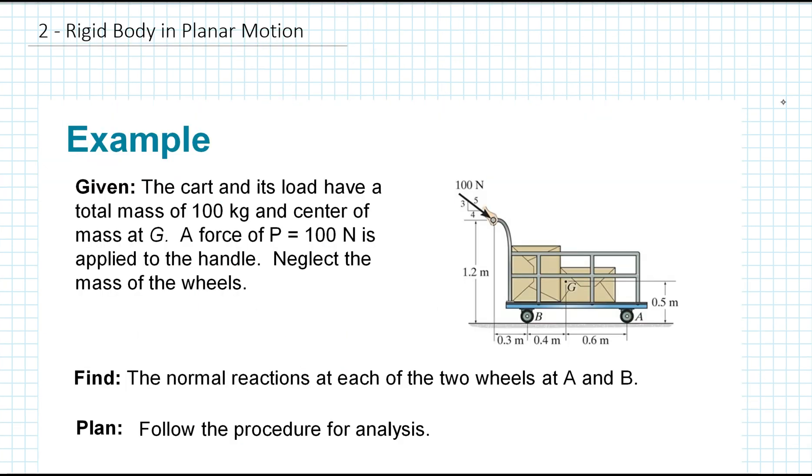Our next example deals with rigid body and planar motion. The example states: given the cart and its load have a total mass of 100 kilograms and center of mass at G, a force P equals 100 newtons is applied to the handle. We neglect the mass of the wheels. We are asked to find the normal reactions at each of the two wheels at A and B.